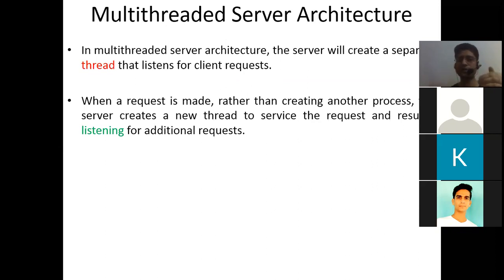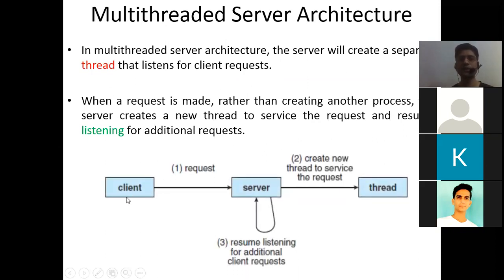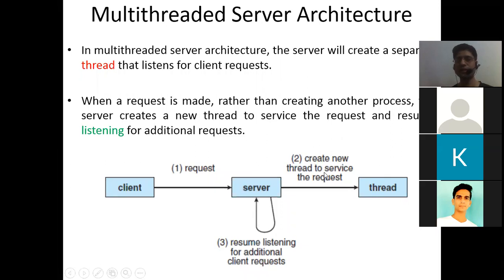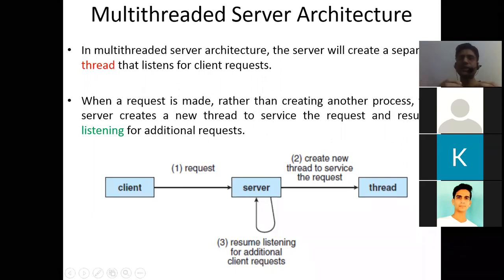When a request is made, the server creates a new thread to service the request and resumes listening for additional requests. As shown in the diagram: the client requests a download, the server creates a new thread to service that request, the client downloads the admit card via that thread, and the server is free to listen for the next client. In this manner, with threads, we can scale — catering to a large number of users at a time.